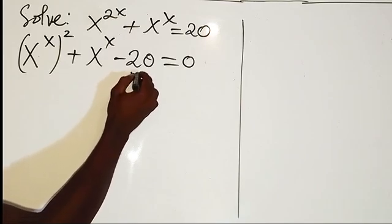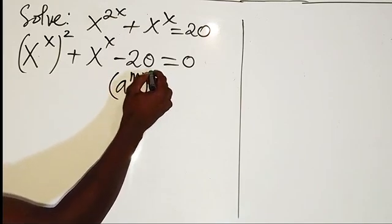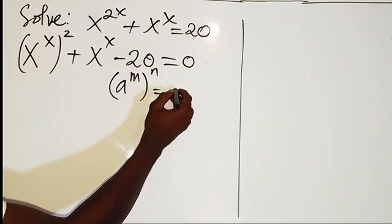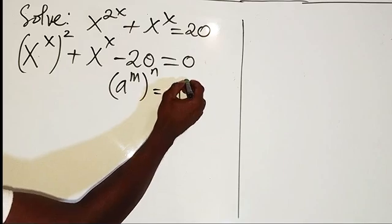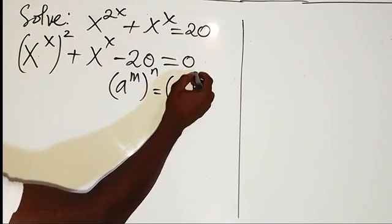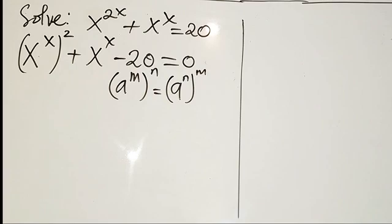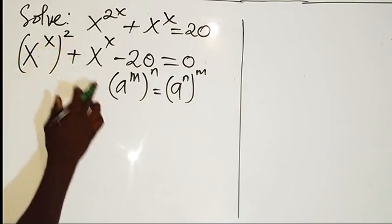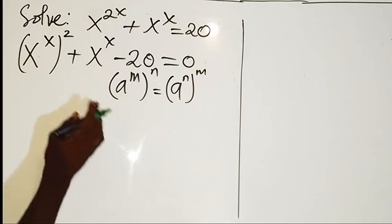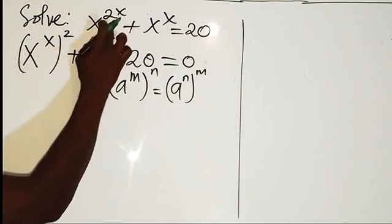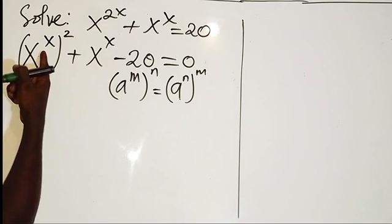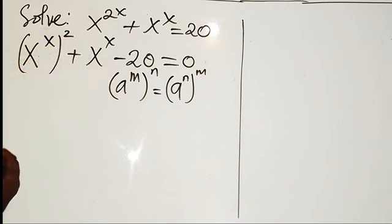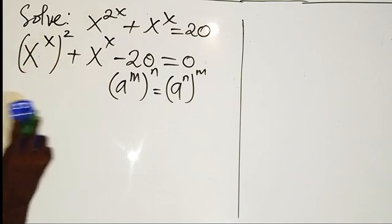We have something called if we have a to power m and we have n outside, so we can also write this as a to power n times m. So now from there, that is what we did here. Initially we have x here, then this is 2. But now what have we done? We only interchange the power, so x is coming inside the parentheses and 2 is going outside.